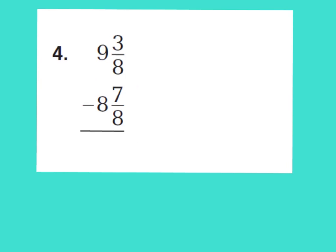Let's look at number 4. I have 9 and 3 eighths minus 8 and 7 eighths. I can see that I cannot subtract 7 eighths from 3 eighths, so I need to borrow a whole from my 9 wholes and rename 9 and 3 eighths. Taking away a whole leaves me 8 wholes, and I give that whole to the 3 eighths — 1 whole equals 8 eighths — so 3 eighths plus 8 eighths is 11 eighths. My new problem is 8 and 11 eighths minus 8 and 7 eighths.